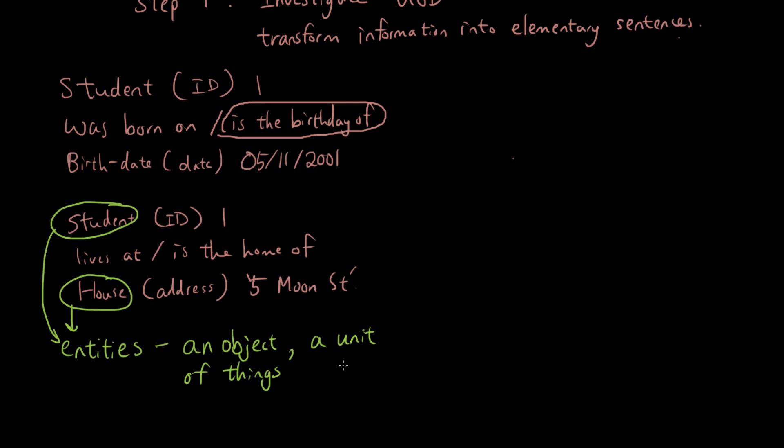What are entities? You can think of entities as basically an object or a unit of things, such as houses or computer hardware. These are all things that are represented in your database. A student is an entity, a house is an entity, and so on.